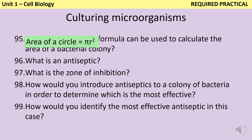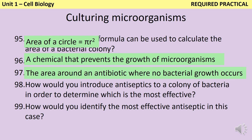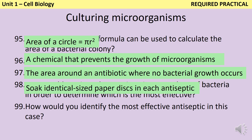The zone of inhibition is the circular area around your antiseptic disk where no bacteria are able to grow. To introduce different antiseptics to a colony of bacteria, you soak little paper disks of the same size in the different antiseptics and place those on top of a culture of bacteria. To identify the most effective antiseptic, you look for the one which has the largest zone of inhibition.